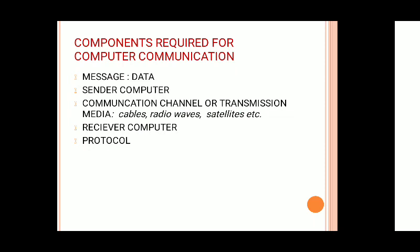For successful computer communication, you need five important components. First is the data or message to be sent. Second is the sender computer — a device that initiates sending data, instructions, or information; it can be a computer or mobile device. Third is the communication channel or transmission media — the medium on which data travels, such as cables, microwave stations, satellites, or radio waves. Fourth is the receiver computer — the device that accepts the transmission of data, instructions, or information, which can also be a computer or mobile device.